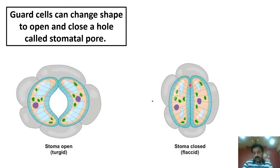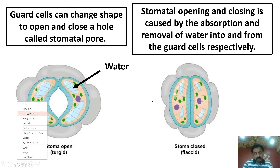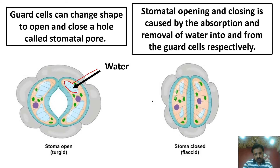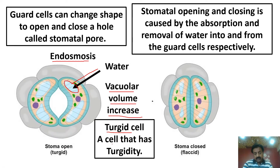Stomatal opening and closing is caused by absorption and removal of water into and from the guard cells respectively. If water enters the cell, it becomes turgid and stomata open. If water exits, the cell becomes flaccid and stomata close. When water moves inward into the vacuole, the vacuolar volume increases — this intake of water is called endosmosis — and the cell becomes turgid.